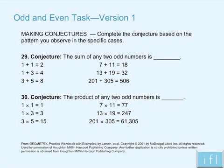Let's take, for example, two versions of the odd and even task. In version 1, students are simply asked to fill in the blank after looking at a small number of examples. When they look at the sum of two odd numbers, they need to say that the sum is even. When they look at the product of two odd numbers, they simply need to say that the product is odd. Nothing else is required of the student.